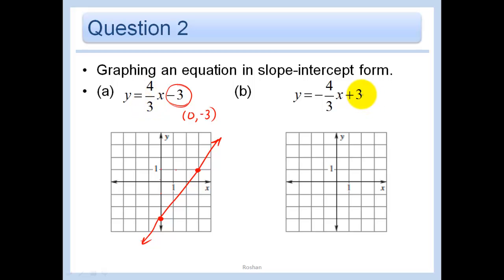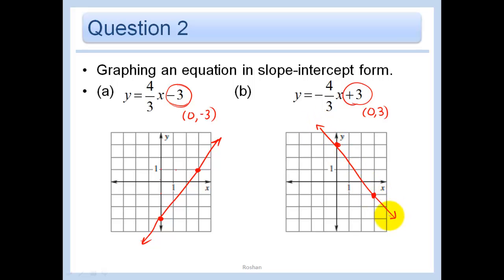Now let's do this one. What is our y-intercept? It's plus three, so our point would be (0, 3). And the slope is negative four-thirds, so I go down four over three. Always check — if it's a negative slope, the line should be falling, which it is.